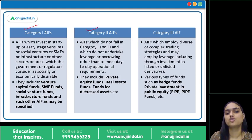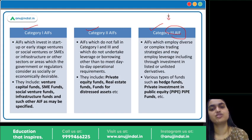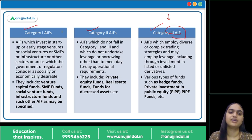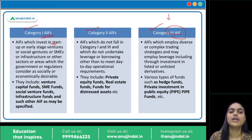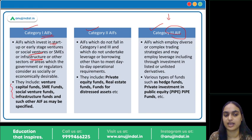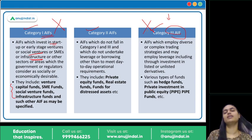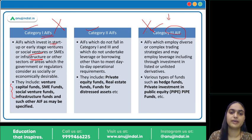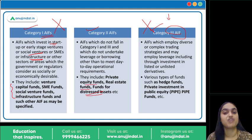Under AIF there are three categories. Category one includes funds invested in startups, social ventures, or the infrastructure sector — examples include venture capital funds, SME funds, social venture funds, and infrastructure funds. Category two includes all funds that are neither part of category one nor category three — these are usually funds that do not undertake any borrowing other than to meet day-to-day requirements. Examples in category two include private equity funds, real estate funds, and funds for distressed assets.